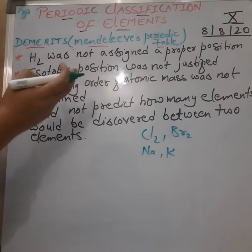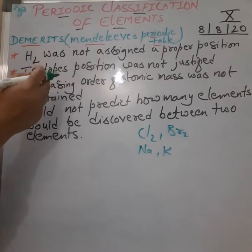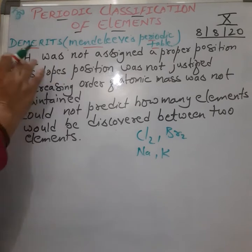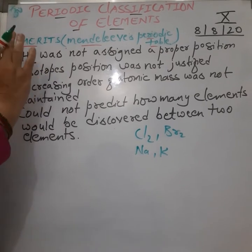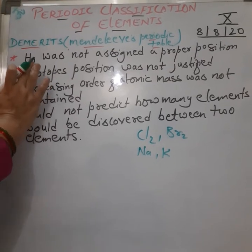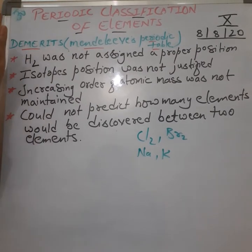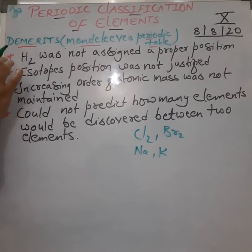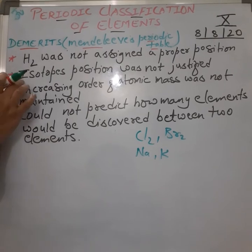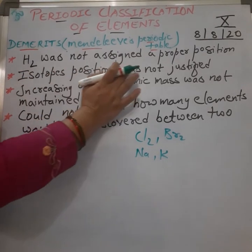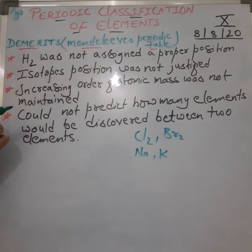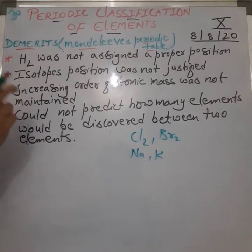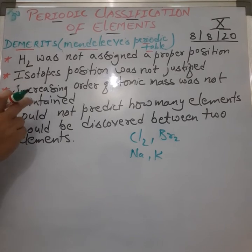But hydrogen was also similar to alkali metals — sodium and potassium — in terms of its reactions, because it can combine with chlorine or bromine just like sodium and potassium do. So Mendeleev could not give a proper reason, but nevertheless hydrogen was placed in period 1, group 1 as per its atomic mass.